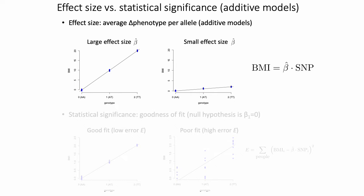The typical way to represent a line of best fit is y = mx + b, or in this context BMI = beta × SNP + beta_0, where beta is the effect size and beta_0 is the y-intercept. The other concept is statistical significance, which for line fitting is also termed goodness of fit.